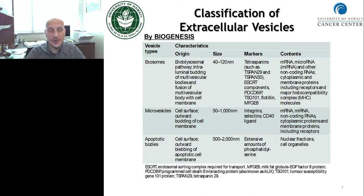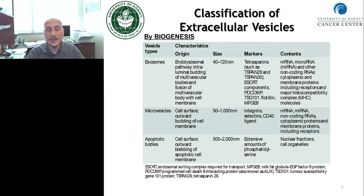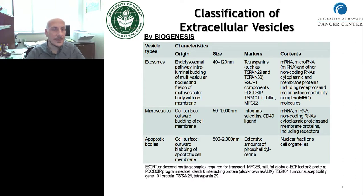To differentiate between these groups of vesicles, different criteria are used, including surface marker expression. Exosomes tend to express tetraspanins such as TSPAN29, TSPAN30, and other molecules such as TSG101. Microvesicles tend to express integrins, CD4 ligand, and selectins. Apoptotic bodies are characterized by extensive phosphatidylserine due to the flipping of lipids in the membrane when the cell dies.